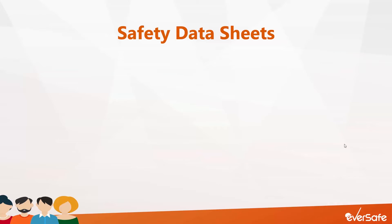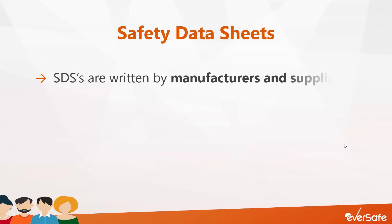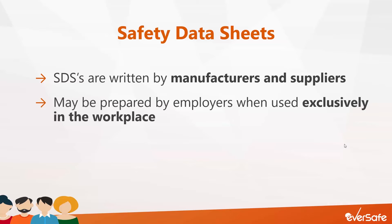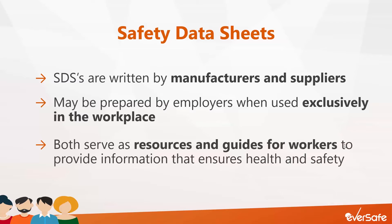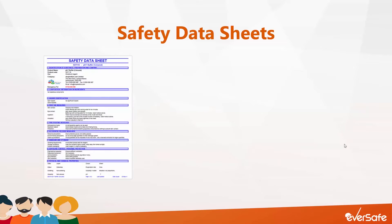There are several similarities between the two types of sheets. For instance, they're both typically written by product manufacturers and suppliers, but they may be prepared by employers whenever products are created and used exclusively in the workplace. Similarly, both documents contain hazard information and are more detailed than product labels. Both documents are resources and guides for workers in workplaces, helping with identification of hazards and promoting precautionary measures when dealing with various products.